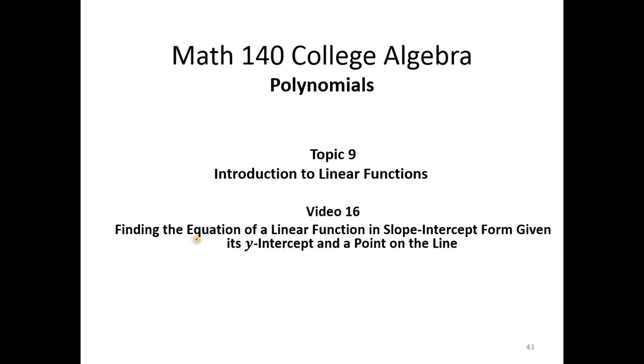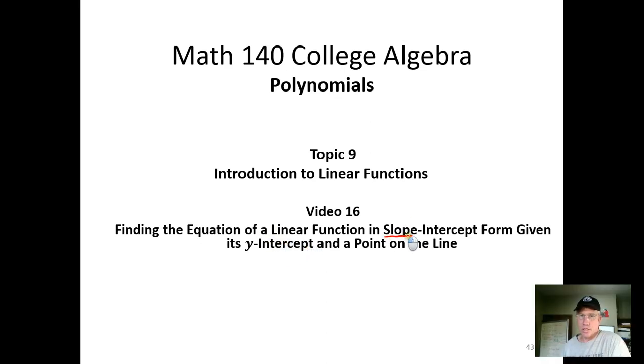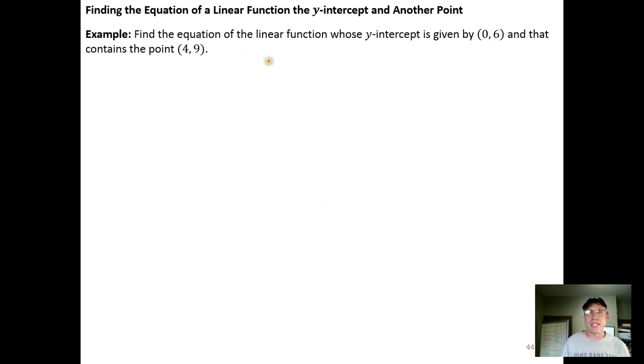In this video we're going to find the equation of a linear function in slope-intercept form if we know the y-intercept and we know a point that is on the line. So here it says find the equation of a linear function whose y-intercept is given by (0,6) and that contains the point (4,9).